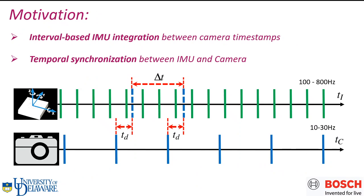In order to fuse camera and IMU, we need interval-based IMU integration, because IMU is much faster than camera. Between camera time steps, there are always quite a few IMU readings. Besides that, we also need to align the camera IMU timeline carefully.